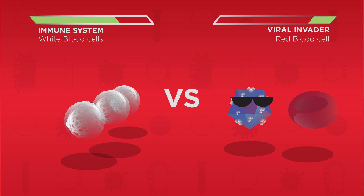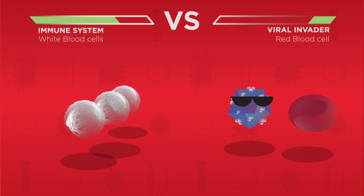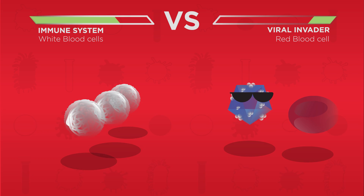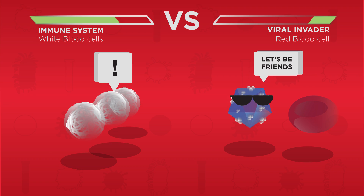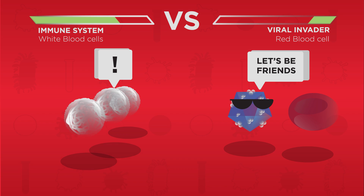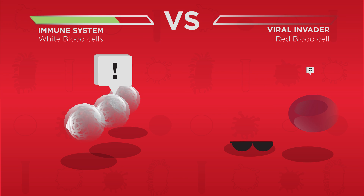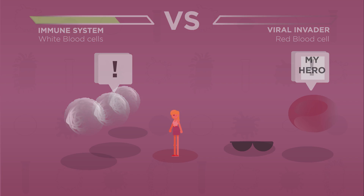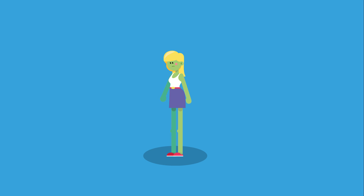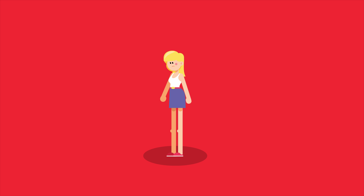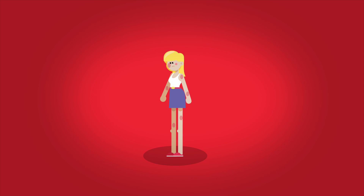Fortunately, the human immune system is very good at dealing with viral invaders. Sometimes our immune system will recognize the virus as an intruder and destroy it before it gains entry into a cell. Even after infection begins, our immune system can destroy the virus and the person recovers. Sometimes the immune system cannot destroy the virus fast enough, and the virus can cause permanent damage or death.